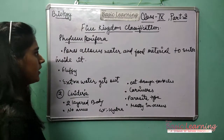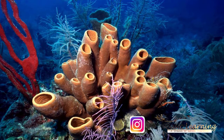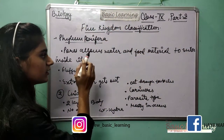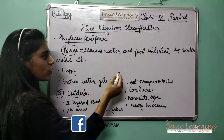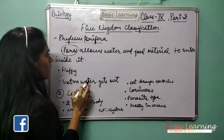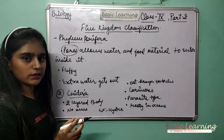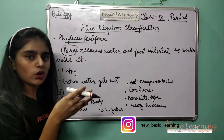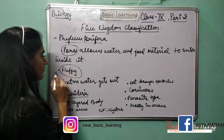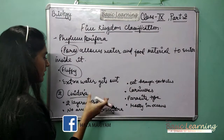Now let's move forward. First we will understand Phylum Porifera — it is the first phylum. Porifera has pores which allow water and food material to enter inside. When water goes inside the porifera it becomes fluffy, and then extra water gets out easily.